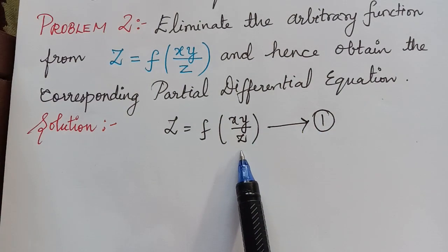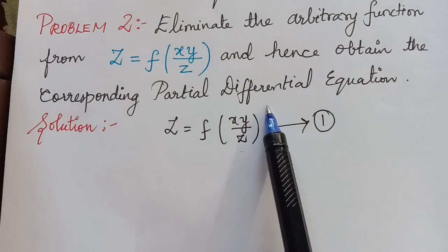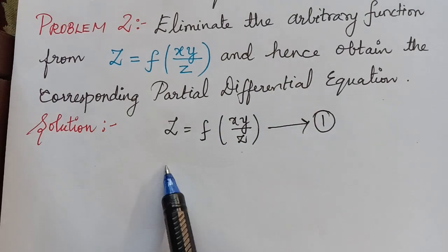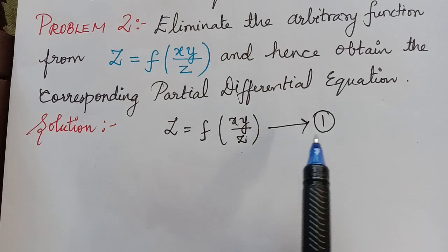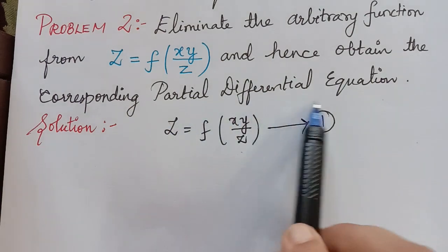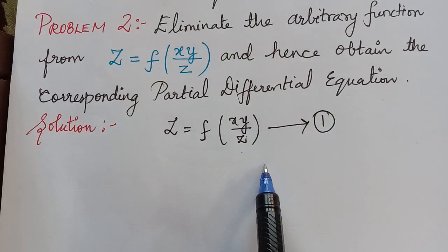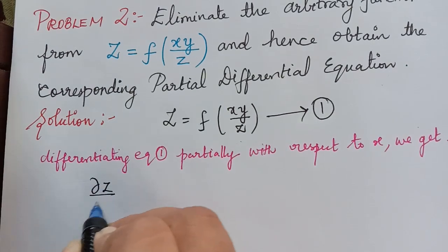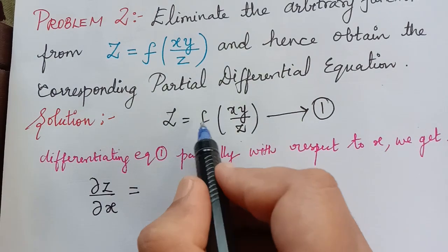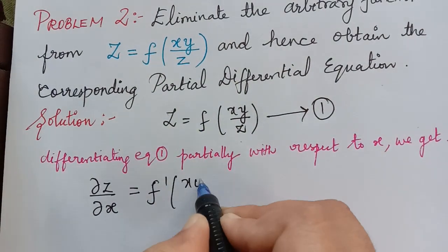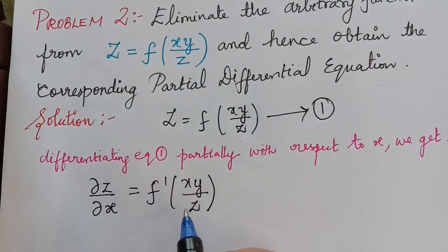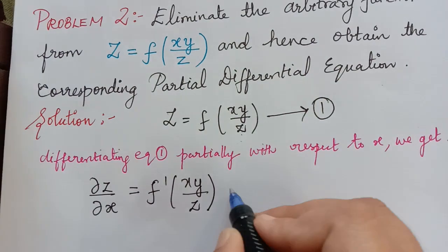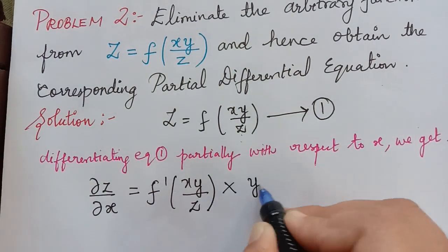As the first step, we have to observe how many functions are given in this equation. We see that there is only one function given. So we have to differentiate this equation partially with respect to x and then partially with respect to y. When we differentiate equation 1 partially with respect to x, we get dou z by dou x equal to f dash of xy by z. Since we are partially differentiating with respect to x, y by z will be treated as constant and the differentiation of x is 1.